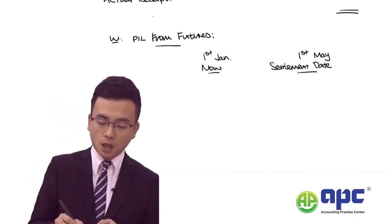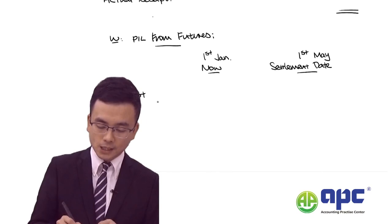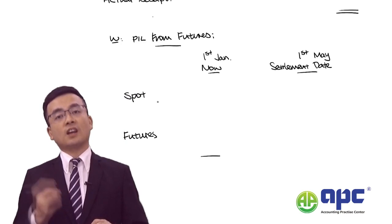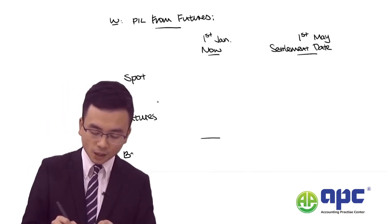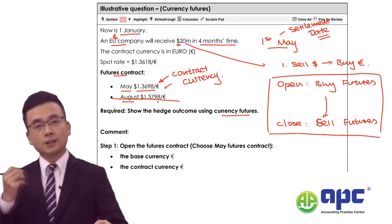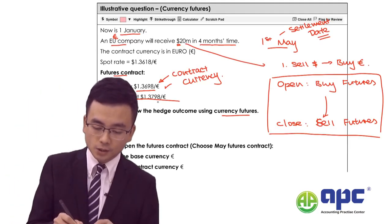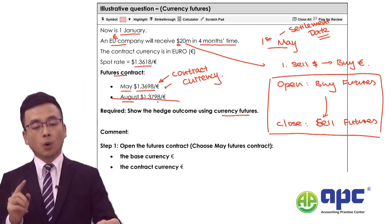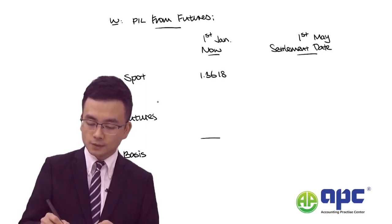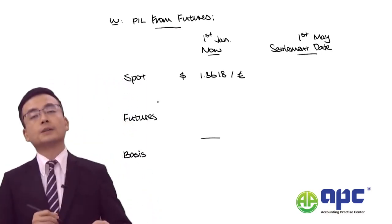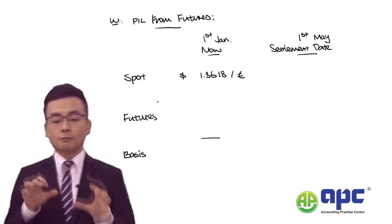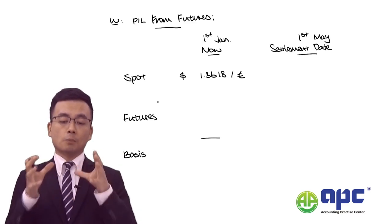As mentioned, we have the spot price and the futures price, and spot minus futures gives us the basis. What is the spot price today on 1st January? We are told the spot rate is $1.3618 per euro. So we are focusing on 1.3618 dollars per euro. We enter into the futures contract at 1.3698.